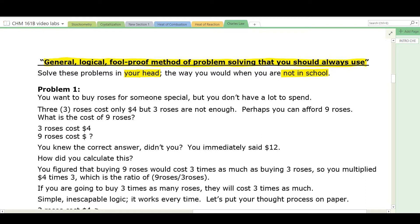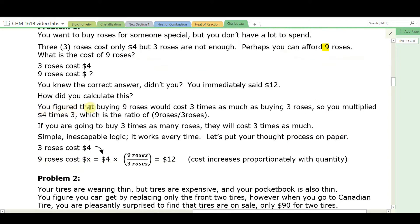Let me give you some examples. Say you want to buy roses for someone special, but you don't have a lot to spend. Three roses cost only $4, but three roses are not enough. Perhaps you could afford to buy nine roses. Well, how much do nine roses cost? So three roses cost $4. Nine roses cost how much? You know the answer. You immediately think in your head $12. Well, how did you do this? Well, you figured that buying nine roses would cost three times as much as buying three roses. So you multiplied $4 times three. Three is the ratio of nine roses over three roses. If you're going to buy three times as many roses, then they cost three times as much. It's pure, simple logic. It works every time.